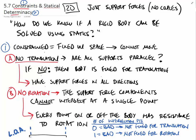We'll break this into two different pieces. First we'll start talking about constraints, and then we'll move on to determinacy itself. Constraints — the definition is fixed in space, it cannot move. It will not move in translation, and it will also not move in rotation.